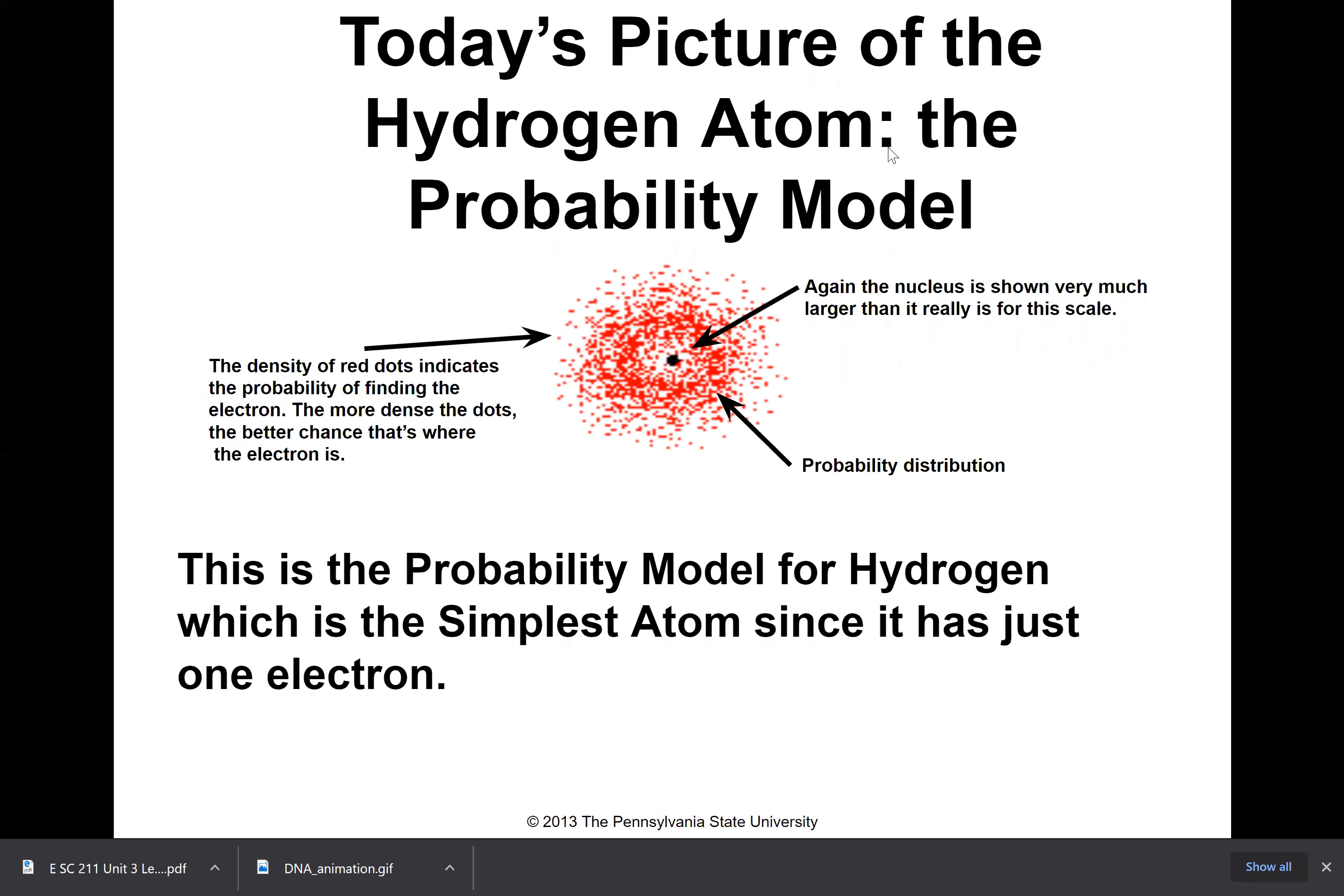This is today's picture of the hydrogen atom and it's called the probability model. In regions chemistry we call it the wave mechanical model. Basically, the density of the red dots, how thick the red dots are, tells you the probability of finding the electron in that spot. You can see the density is higher here and less dense here—there's fewer dots here than there are toward the center. That tells me that the center ring is where the electron most likely is, and out here it's less likely to be. This is called a probability distribution, so this is the current model.